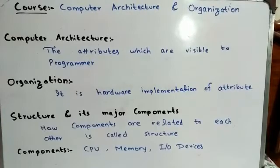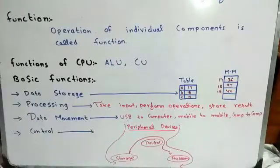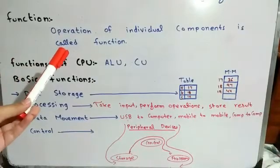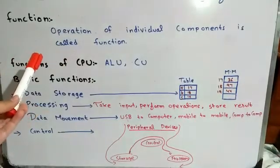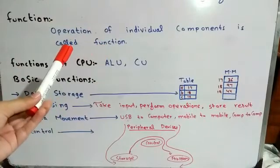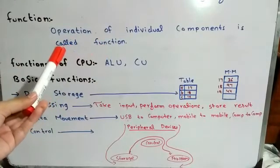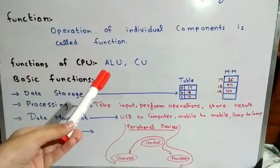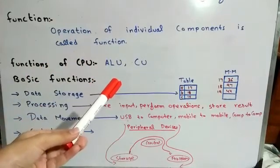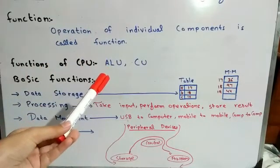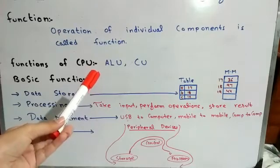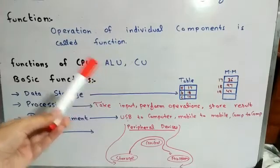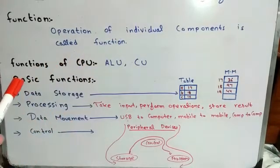Now let's see the definition of function. The operation of individual components is called function. CPU functions include the ALU (Arithmetic and Logical Unit) and CU (Control Unit).